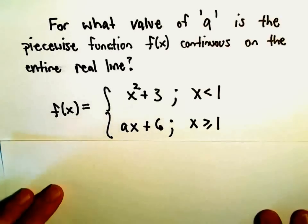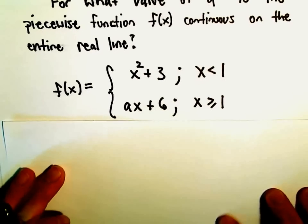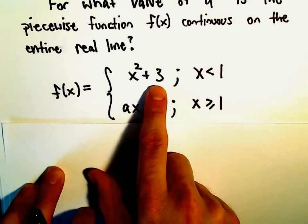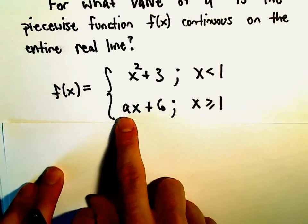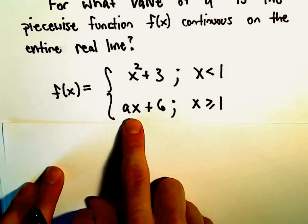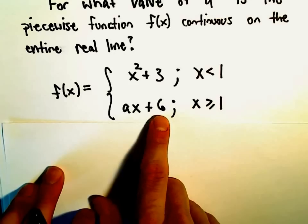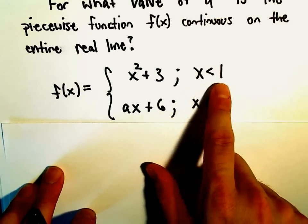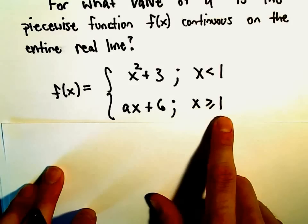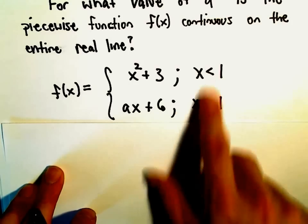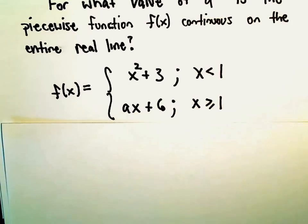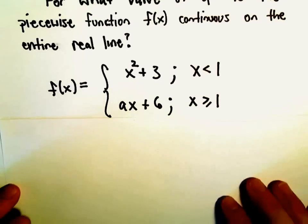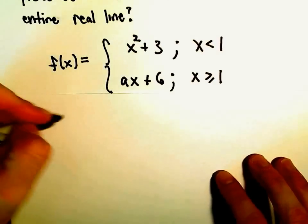So we've seen this result that polynomial functions are continuous on their domain. x squared plus 3 is a polynomial. Whatever value we pick for a, when we multiply that by x plus 6, that's going to be continuous as well. So definitely it's continuous for everything less than 1 and everything greater than 1. Where they kind of break at this x coordinate of 1, they may or may not be continuous depending on the value of a. But we're trying to pick that value of a so that it does happen.